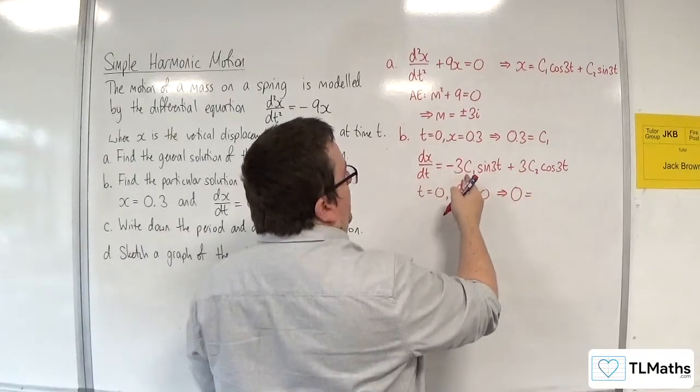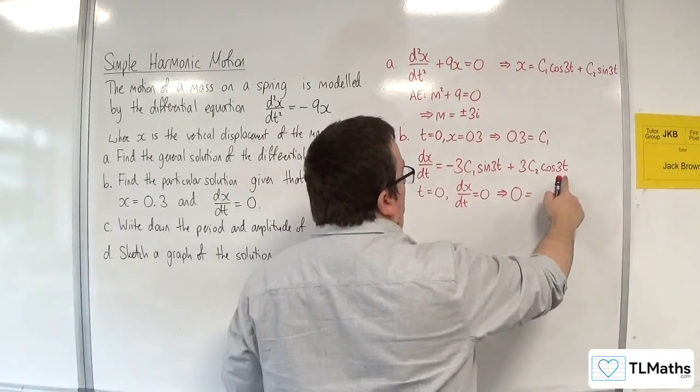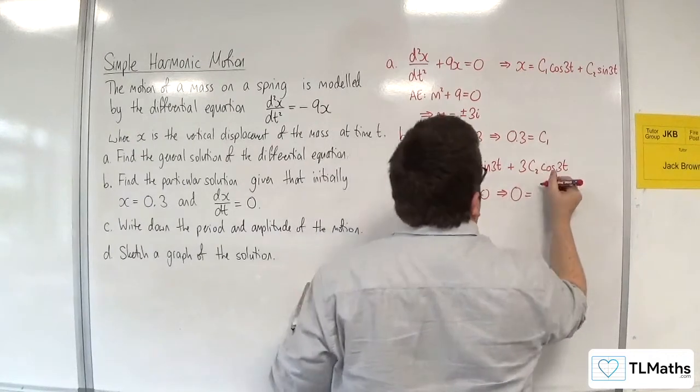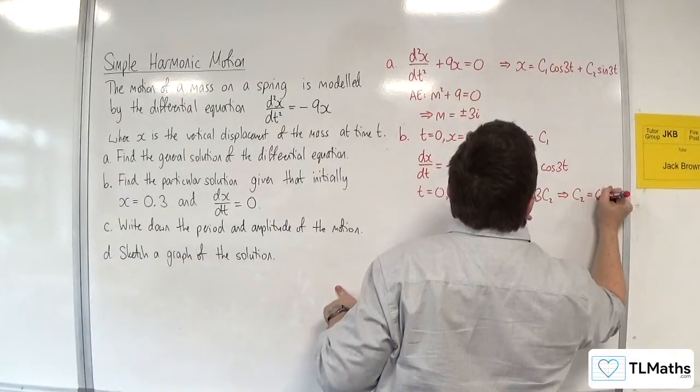So that means that 0 is equal to, well, I know what c1 is, but sine of 0 is 0, so that's gone. Cosine of 0 is 1, so I get 3 lots of c2. So that implies that c2 is equal to 0.